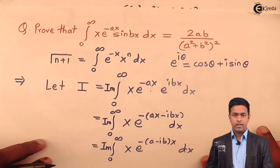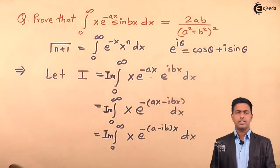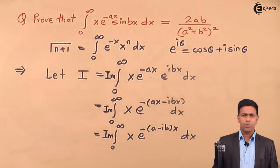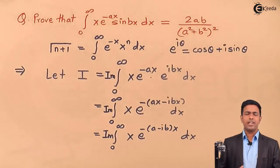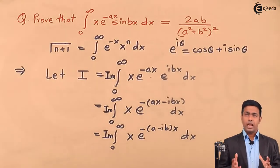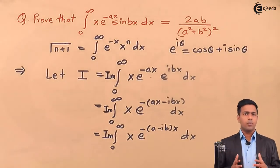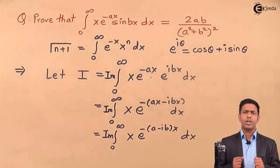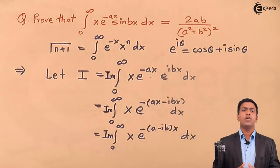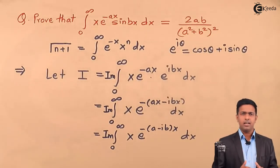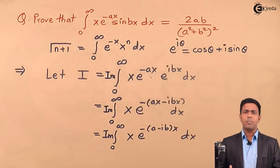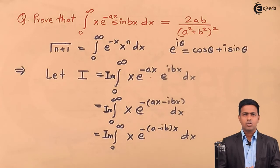As required, we have proved that the value of this integration is equal to 2ab upon (a squared plus b squared) squared, by using the definition of the gamma function. If you like this video and want to learn more numericals and concepts of engineering mathematics, log in to ekida.com to get all videos and concepts in detail. You can also follow us on Facebook and Twitter for the latest updates. See you in the next lecture, thank you.